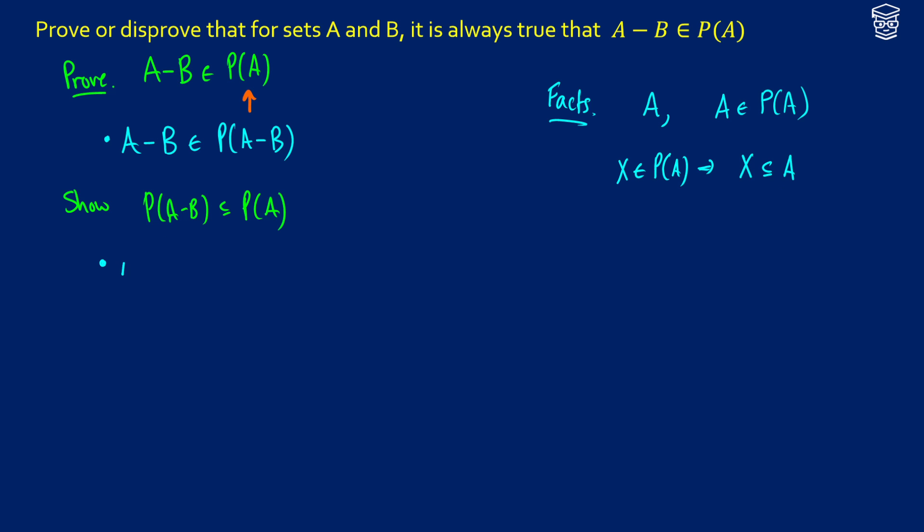So with this information, we now know that A minus B is going to be, in this case, so if X is an element, I should probably back up and say first, that we're going to assume that we have an element X in the power set of A minus B.